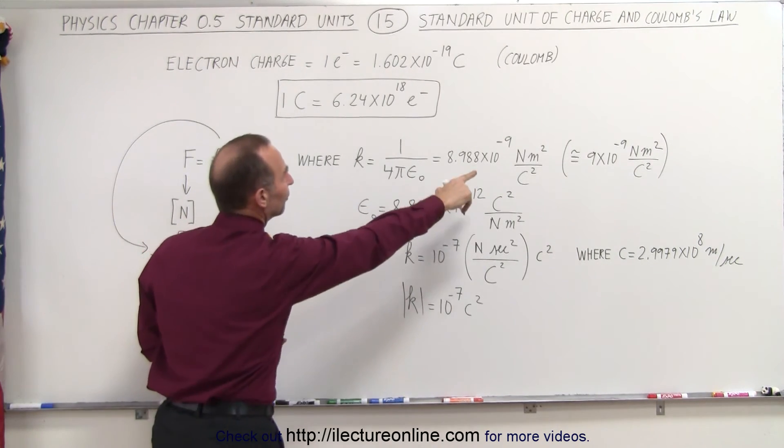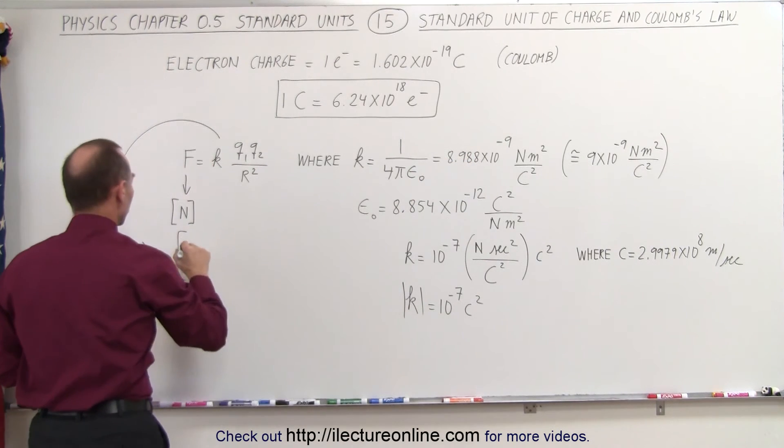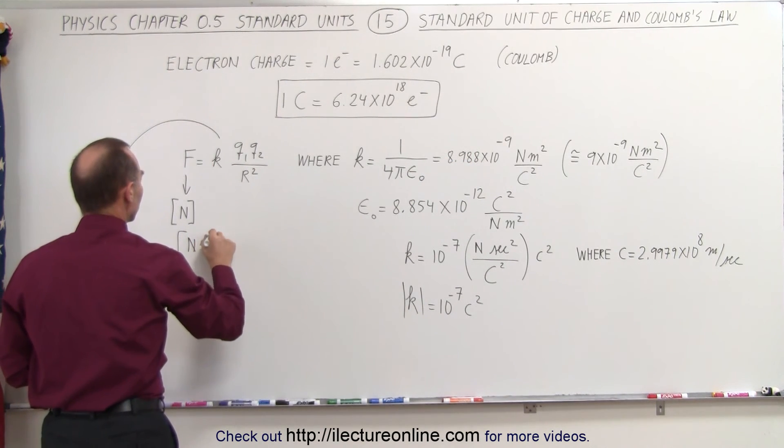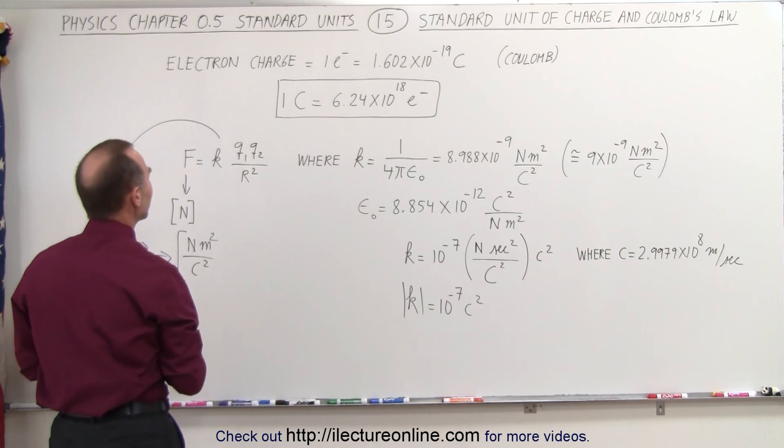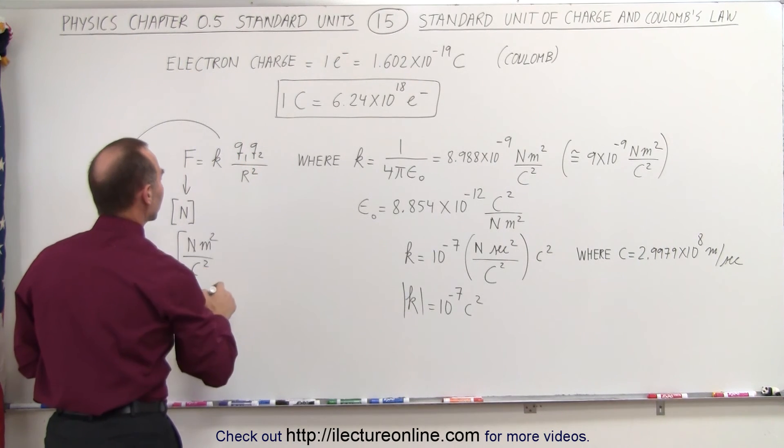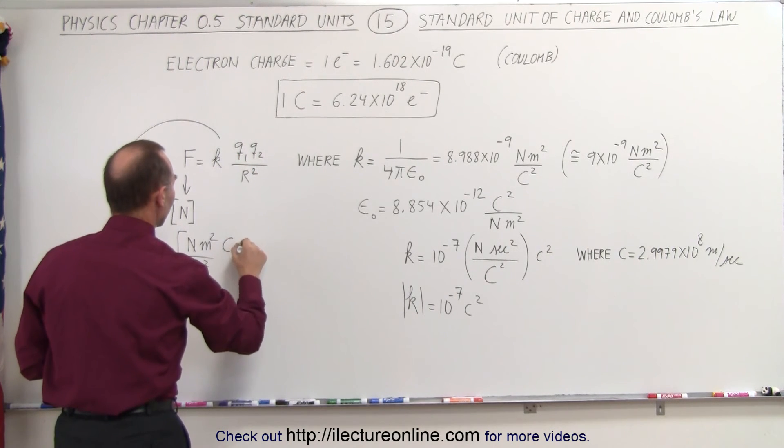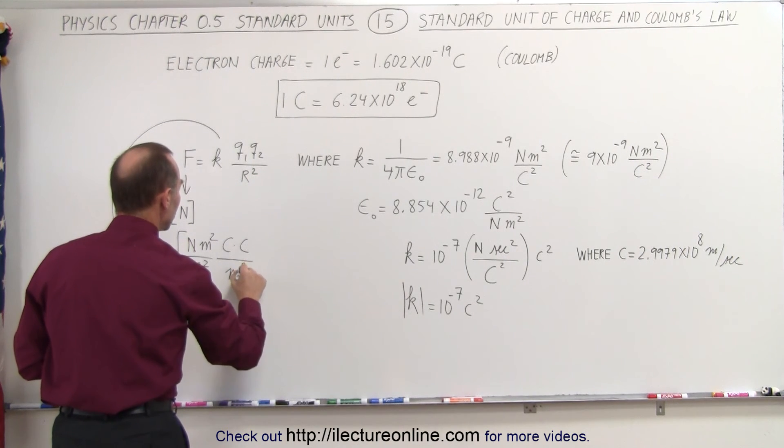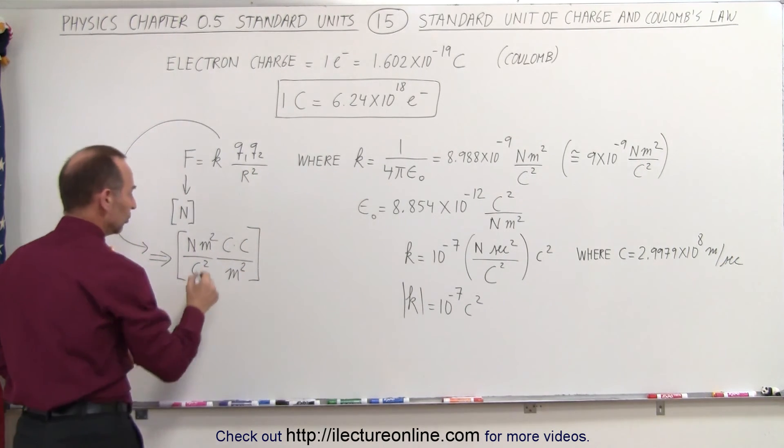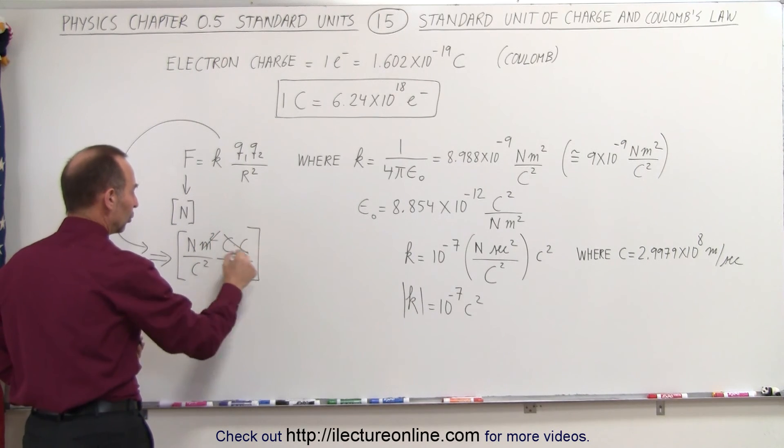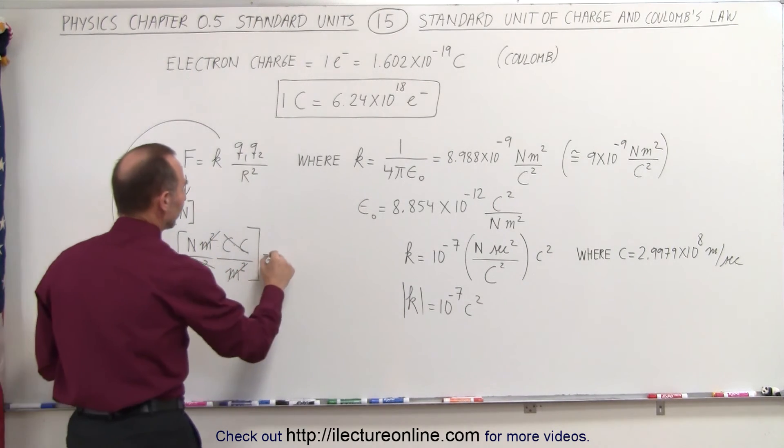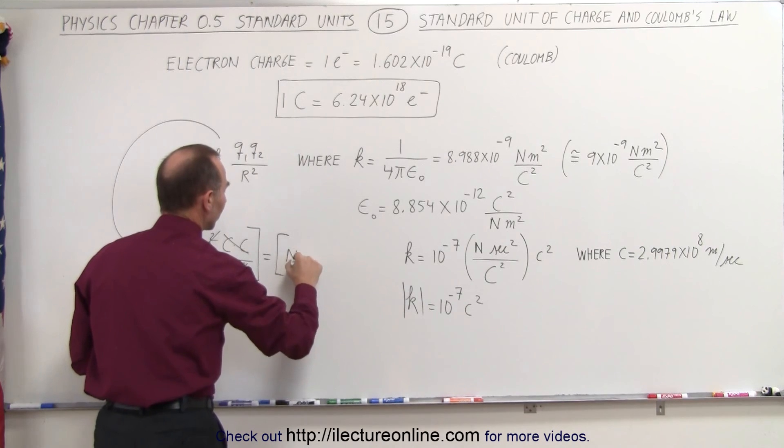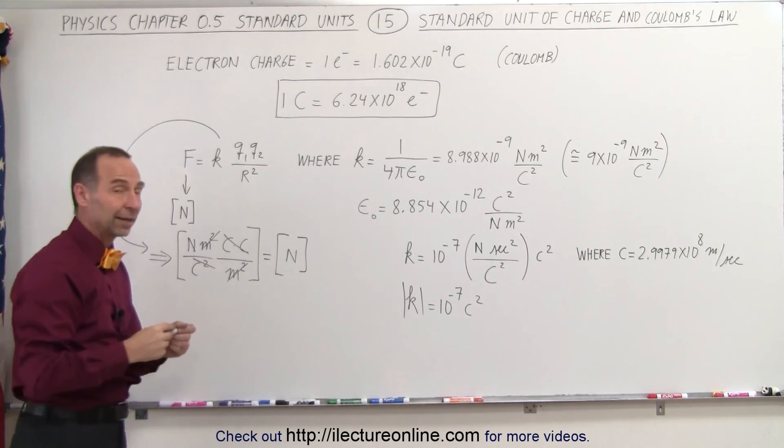We'll take this portion and come up with the units, which hopefully will reduce to newtons. K was defined to have the units of newtons meters squared per coulomb squared. We have the product of the two charges, which is coulombs times coulombs divided by the distance squared, meters squared. Note that the meters cancel out, the coulombs cancel out, and sure enough, we get the units of newtons on the right side, which is what we would expect.